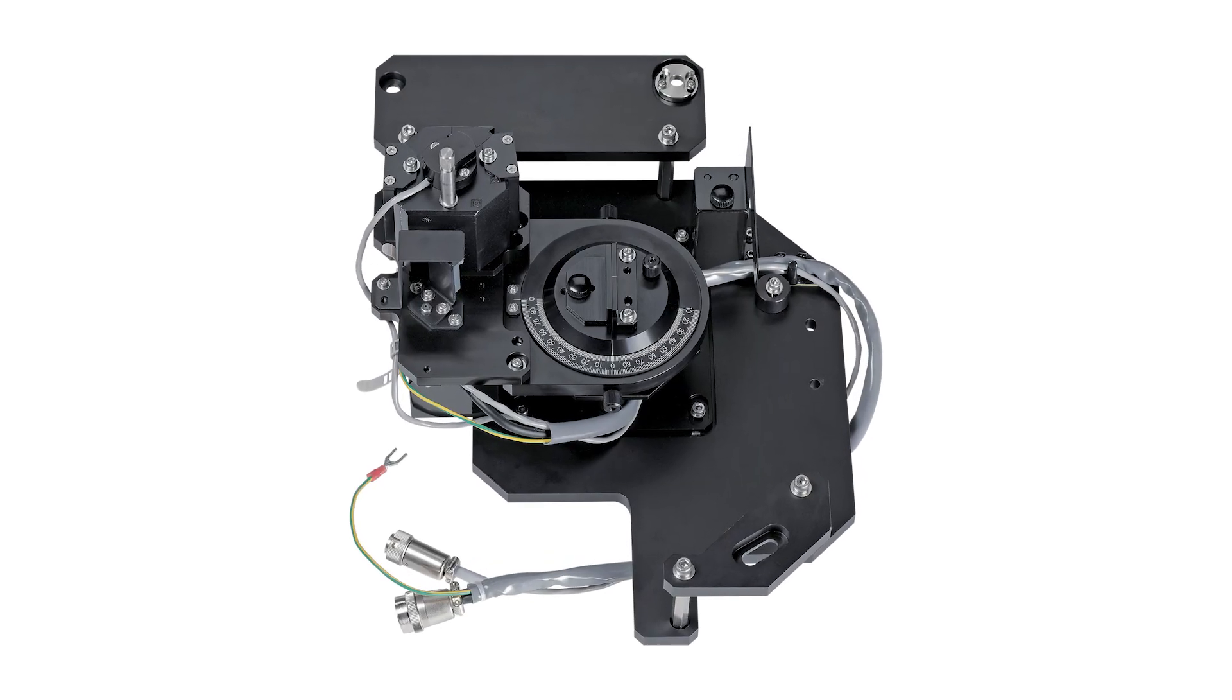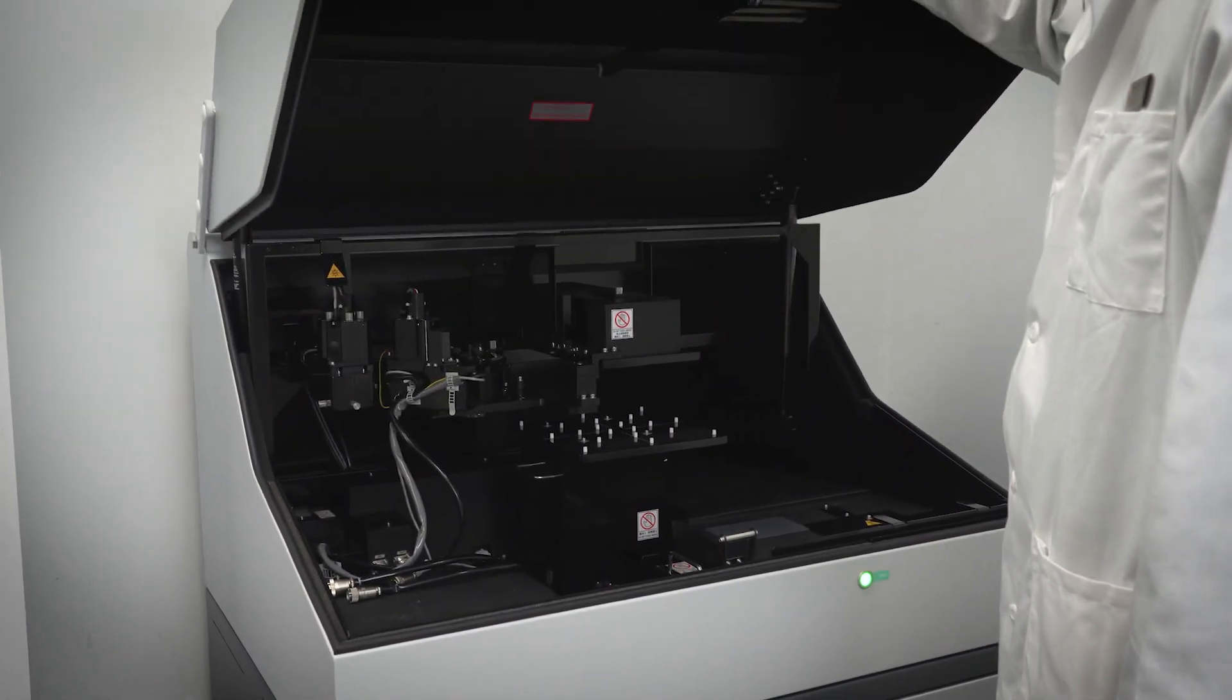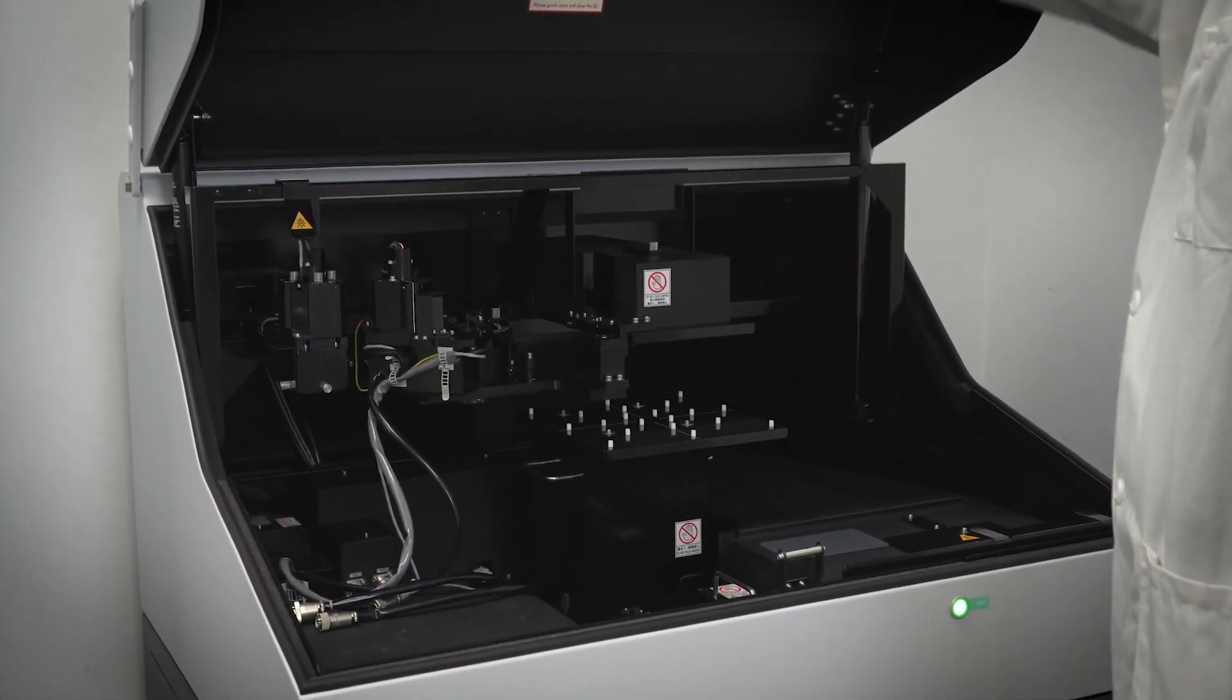In this video, I will show you how to measure absolute reflectance with the Variable Angle Specular Reflectance attachment. The Variable Angle Specular Reflectance attachment is available on several Shimadzu UV-Vis spectrophotometers.